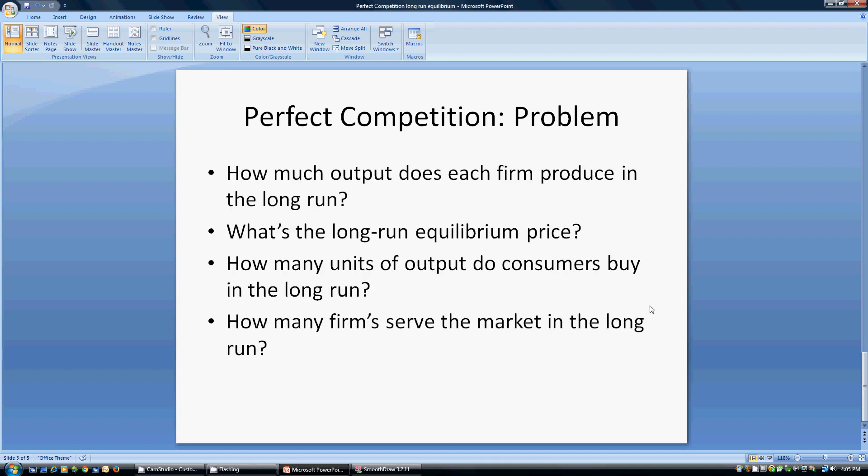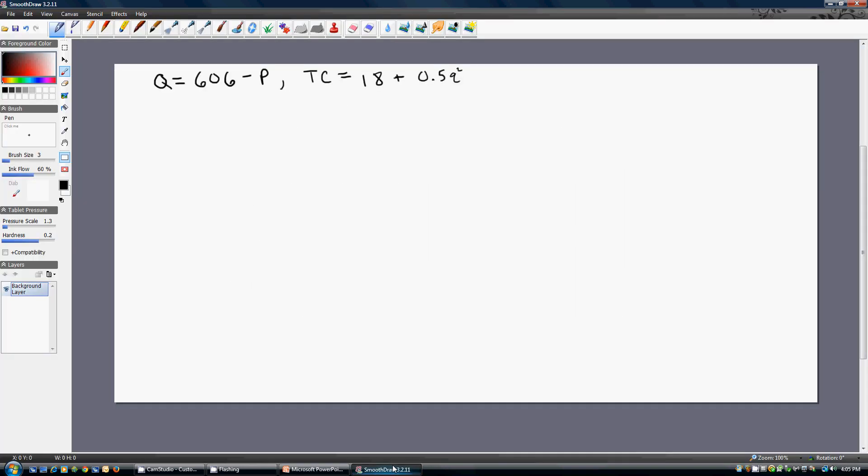Here are some questions we'll answer: How much output does each firm produce in the long-run? What's the long-run equilibrium price? How many units do consumers buy in the long-run? How many firms serve the market in the long-run?